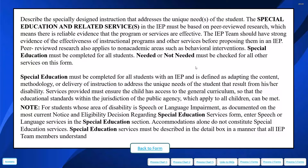Special education must be completed for all students. Needed or not needed must be checked for the other services on the form. Special education is defined as adapting the content, methodology, or delivery of instruction to address the unique needs of a student that result from their disability. The services provided must ensure that children have access to the general education curriculum so that the standards can be met. It's important that we describe specifically in special education how we are adapting the content, methodology, or delivery.